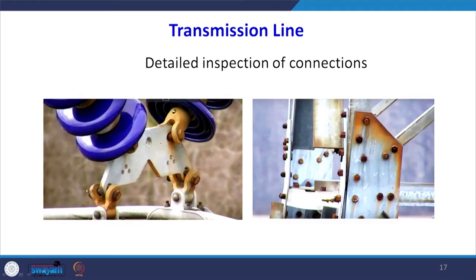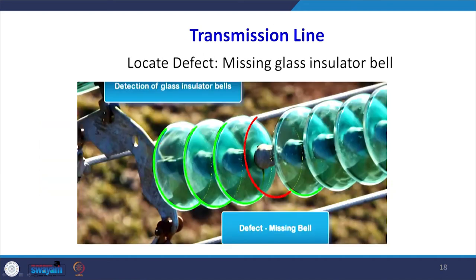Another application is transmission line inspection. Detailed inspection of connections can be carried out — including identifying loose connections and rust. Defects can be located in the transmission line. For example, it is possible to identify a missing glass insulator bell on a transmission line, marked with a red line, and then carry out maintenance or replacement work accordingly.